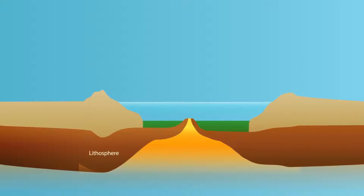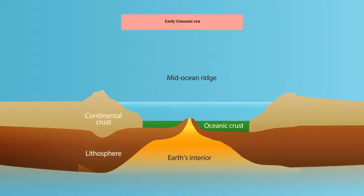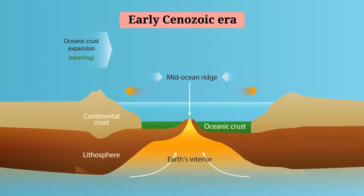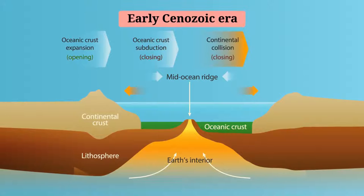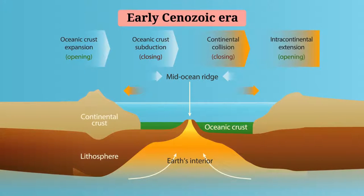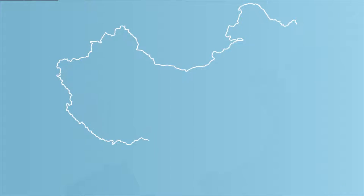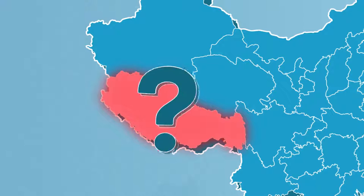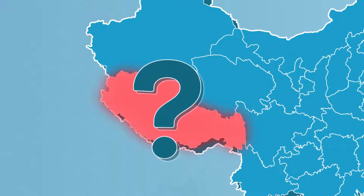They also found that during the early Cenozoic era, the region had developed through multiple stages of geological events involving the opening and closing of the oceanic crust as well as the continental plates. This new model was also able to explain some other puzzling features of the geographical structures in southern Tibet.